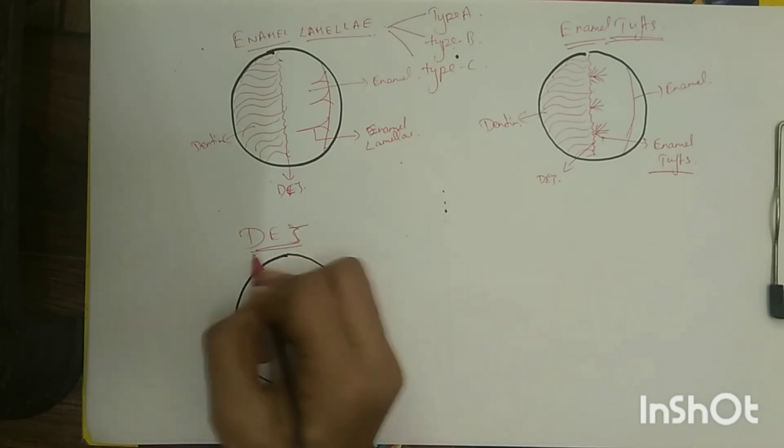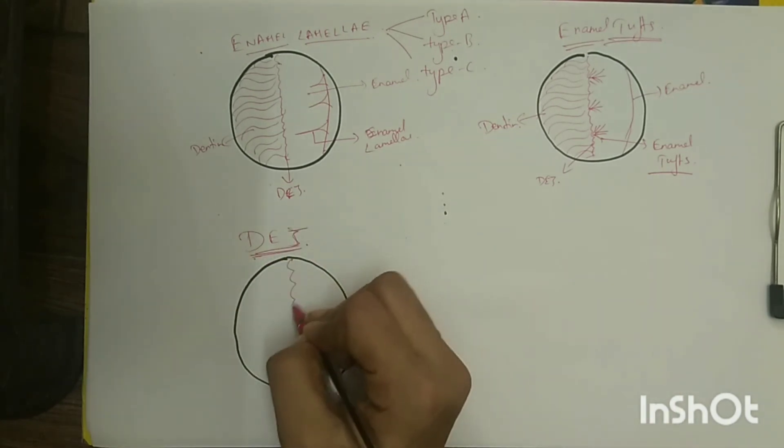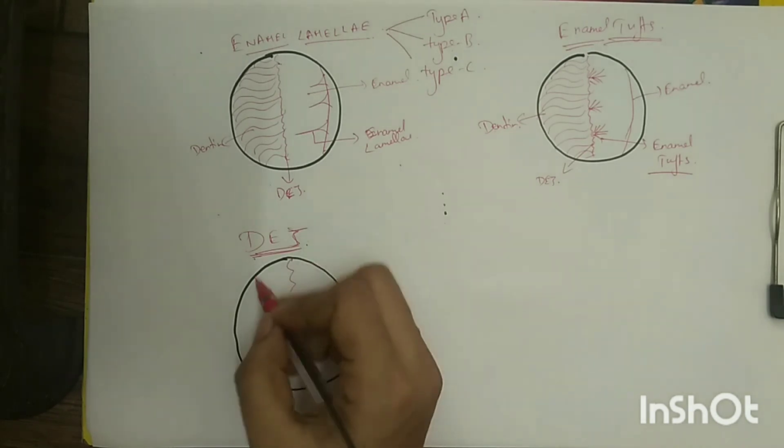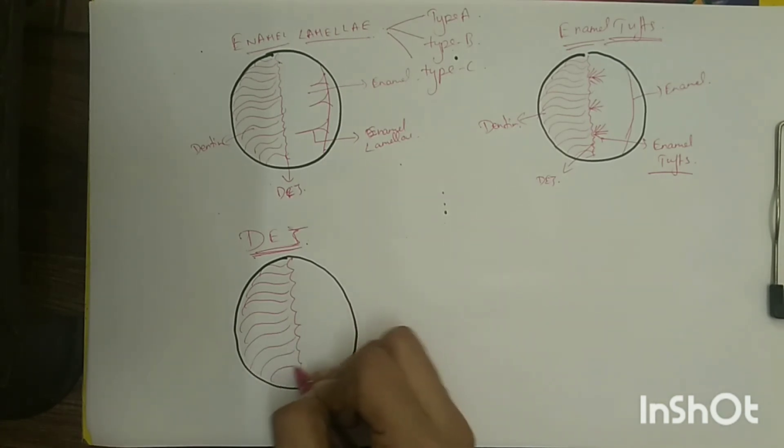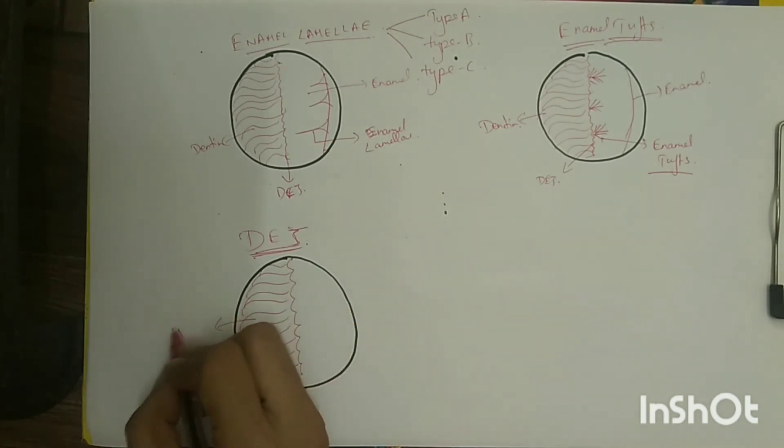The dentino-enamel junction: the dentinal surface of enamel is formed by a series of dome-shaped elevations arranged closely, fitting into the shallow depressions of the dentin.